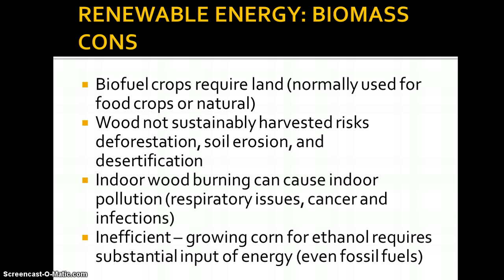Burning biomass to heat water to turn to steam is not a very efficient way of producing electricity. And the input amount of energy that goes into growing corn, then harvesting it, then creating ethanol is a lot — though it's also a lot for fossil fuels as well. So none of these are very efficient at this point.